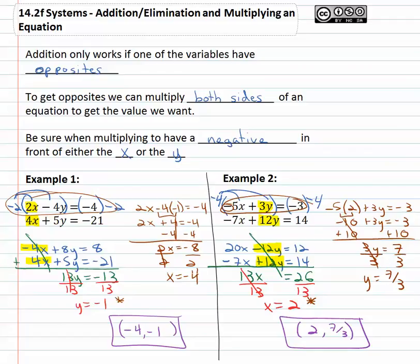Multiplying both sides gives us opposites in front of one of the variables.